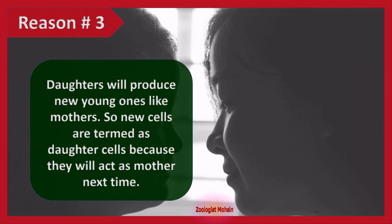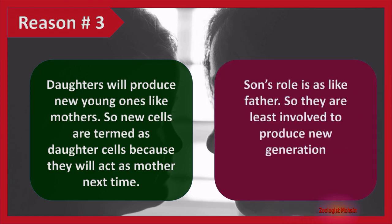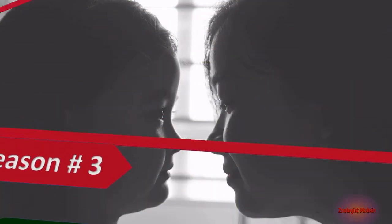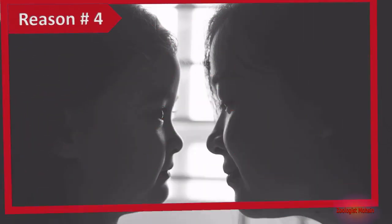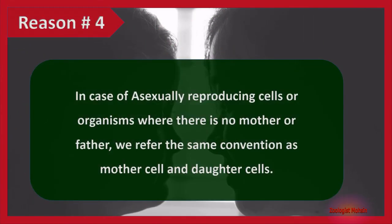Reason three: daughters will produce new young ones like mothers, so new cells are termed daughter cells because they will act as mothers next time. A son's role is like a father's, so they are least involved in producing new generations. Reason four: in the case of asexually reproducing cells or organisms where there is no mother or father, we refer to the same convention of mother cell and daughter cells.